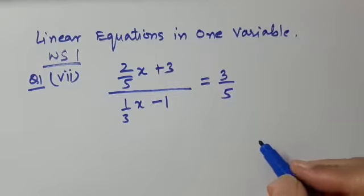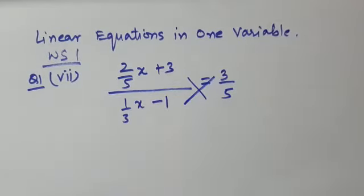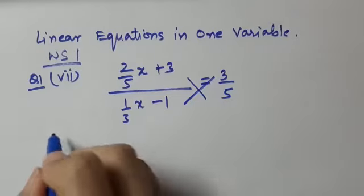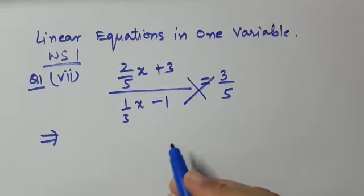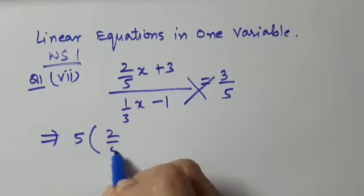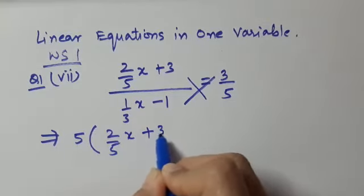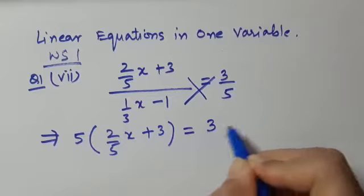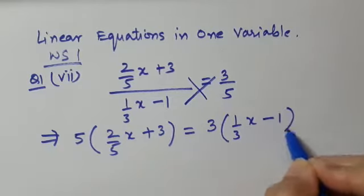Here we are going to use the cross multiplication method. Now tell me, what will be the first step? It will be 5 into 2 upon 5x plus 3, equal to 3 into 1 upon 3x minus 1.